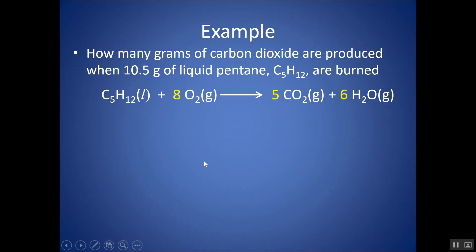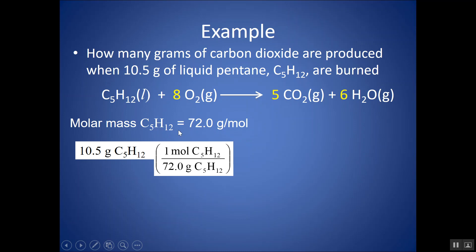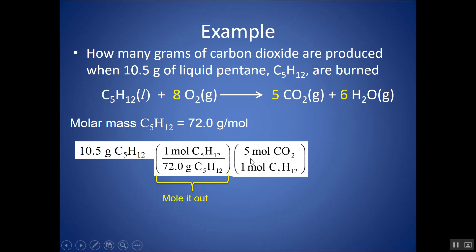Try this example: Starting with 10.5 grams of C₅H₁₂. To use these coefficients I need to be in moles, but I'm in grams, so first step — mole it out. The molar mass of C₅H₁₂ is 72 grams per mole. Put grams on the bottom to cancel and moles on top, giving moles of C₅H₁₂. I don't want C₅H₁₂; I want CO₂. So I convert moles of C₅H₁₂ to moles of CO₂ using the 1 to 5 mole ratio from the coefficients — these represent mole ratios only, not mass ratios.